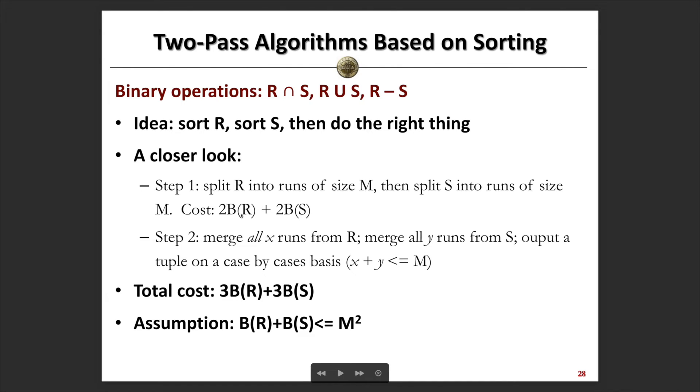For step 1, we have 2B(R) + 2B(S). For the merging process, we also have B(R) + B(S). So the total cost is 3B(R) + 3B(S). We also have the assumption that B(R) + B(S) is no greater than M².